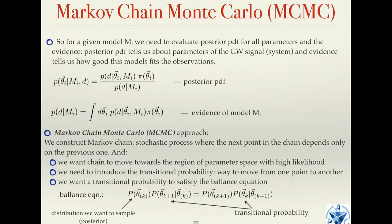We want the chain to move predominantly in the direction of maximum likelihood. We want the transitional probability to satisfy a very specific balance equation. This P is the distribution we want to sample — in our case, it is the posterior. If the transitional probability satisfies this equation, the theorem tells us that after some time, the chain starts drawing points from the desired distribution, which is the posterior.